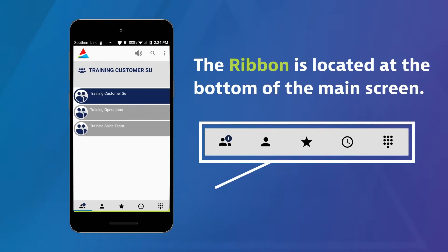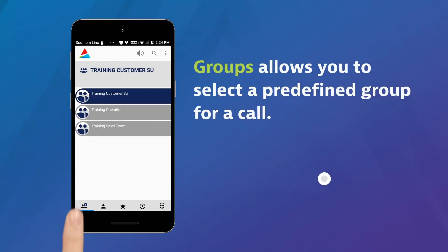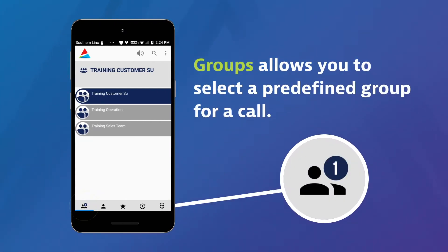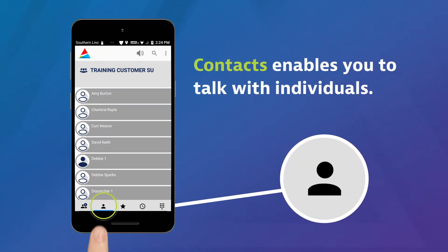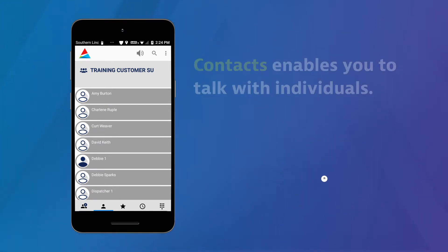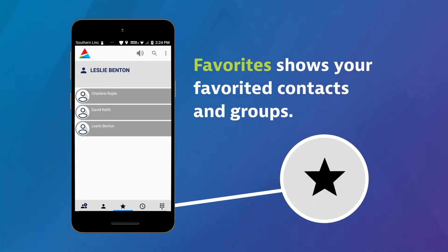First, notice the ribbon at the bottom of the main screen. Groups allows you to select a predefined group for a call. Contacts enables you to talk with individuals. Favorites shows your favorited contacts and groups.